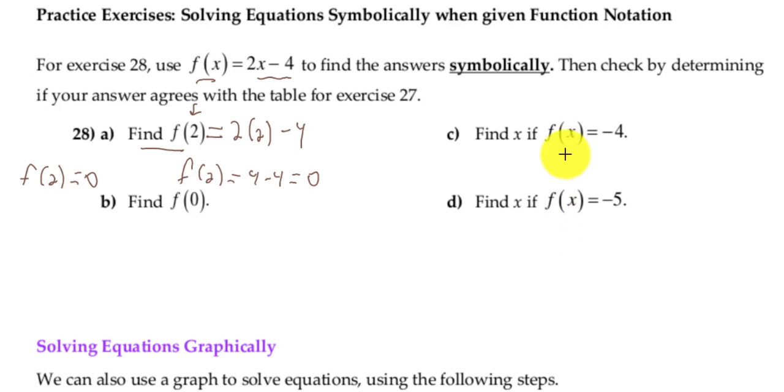Now, for letter c, we don't know x. Notice how c and d, the instructions are find x, whereas the instructions for a and b are find f of 2, find f of 0. So here, letter c, we don't know x, but we know f of x equals negative 4. So if this is f of x, and we know f of x is equal to negative 4, I can place a negative 4 here and set it equal to 2x minus 4.